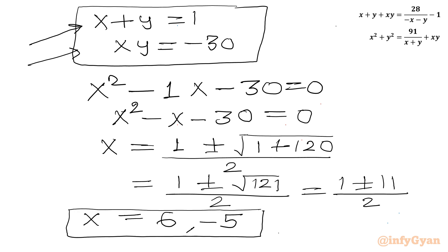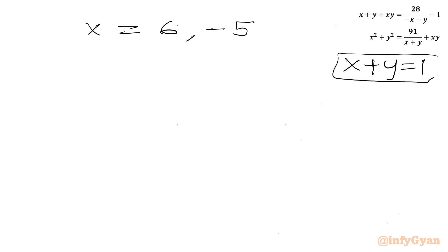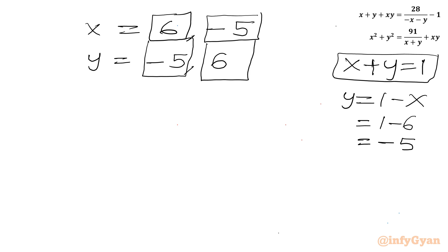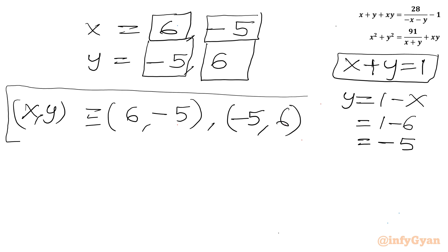So we have x equal to 6 and x equal to negative 5 as our solutions. Using x plus y equal to 1: when x equals 6, y equals 1 minus 6, so y equals negative 5. When x equals negative 5, y equals 6. So we can write our ordered pairs (x, y) as: (6, negative 5) and (negative 5, 6). This is our solution for the given system.